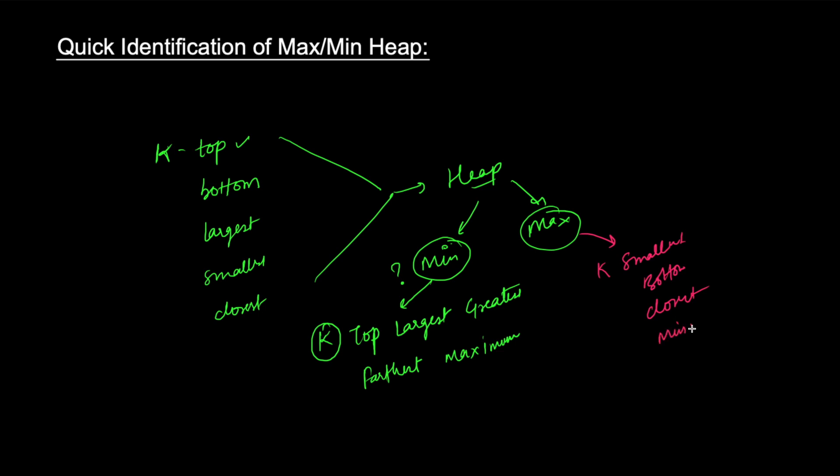K closest, not farthest but closest. And if there is k minimum - on the basis of k smallest, not greatest but smallest, or shortest, not longest but shortest. In these cases, we will be using max heap.